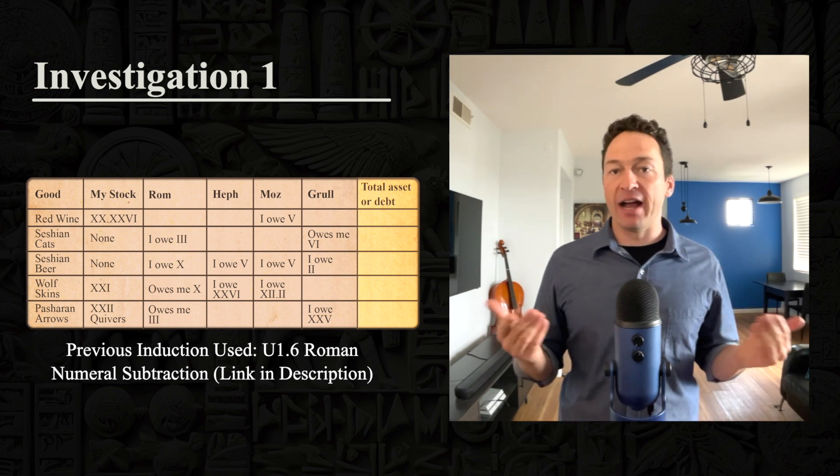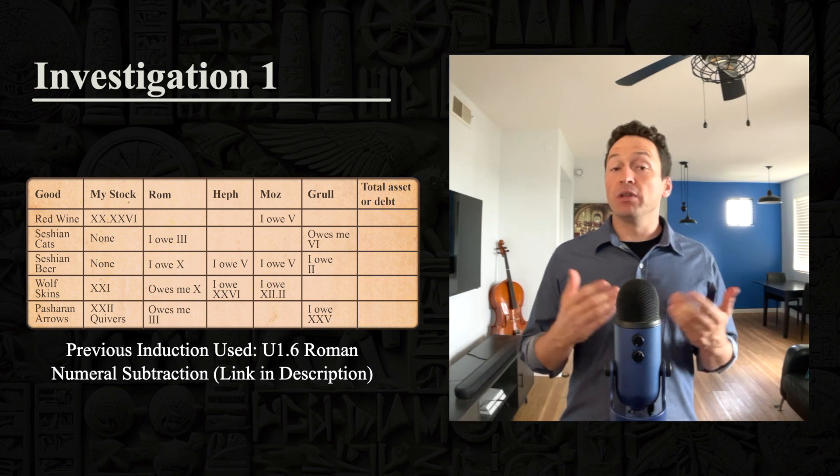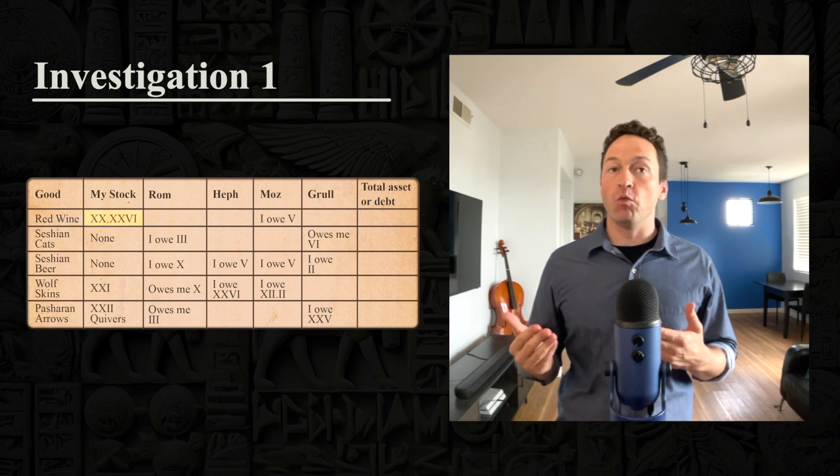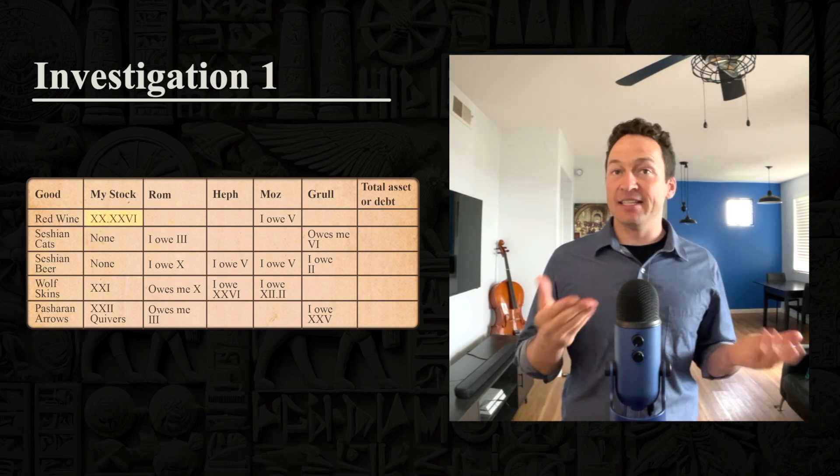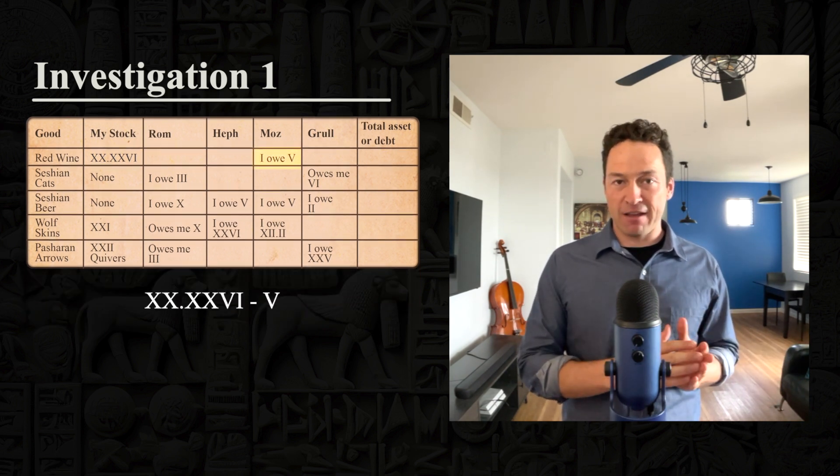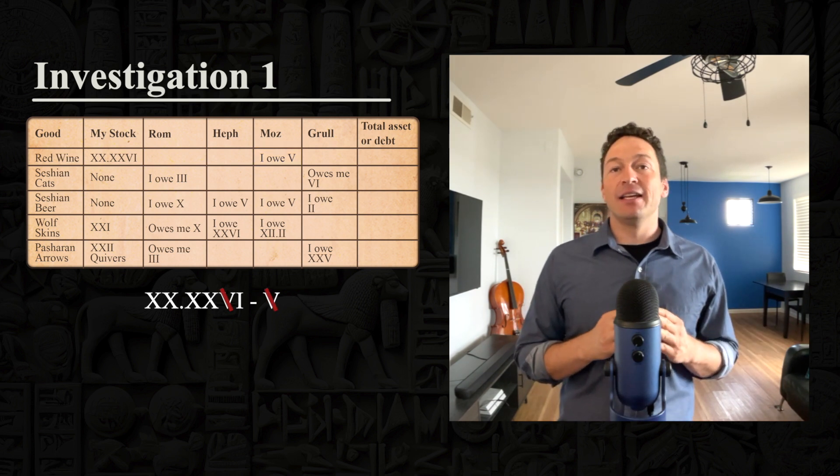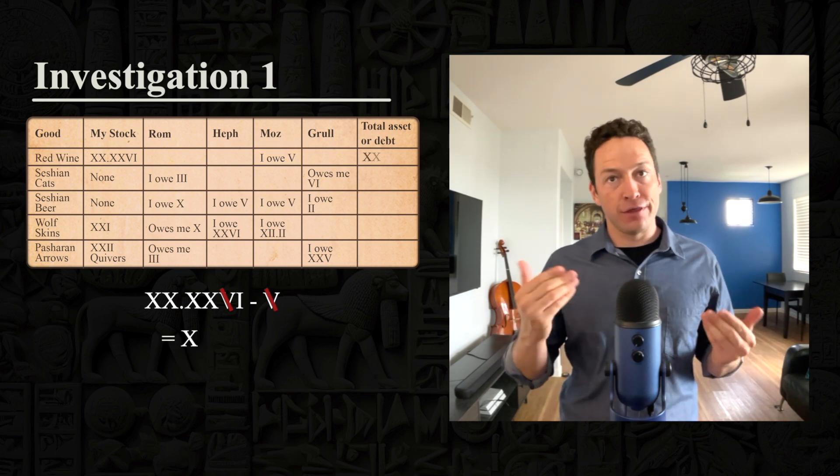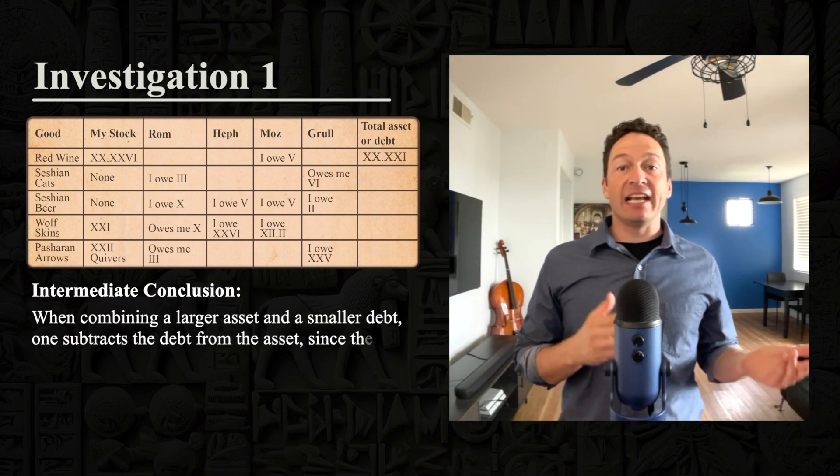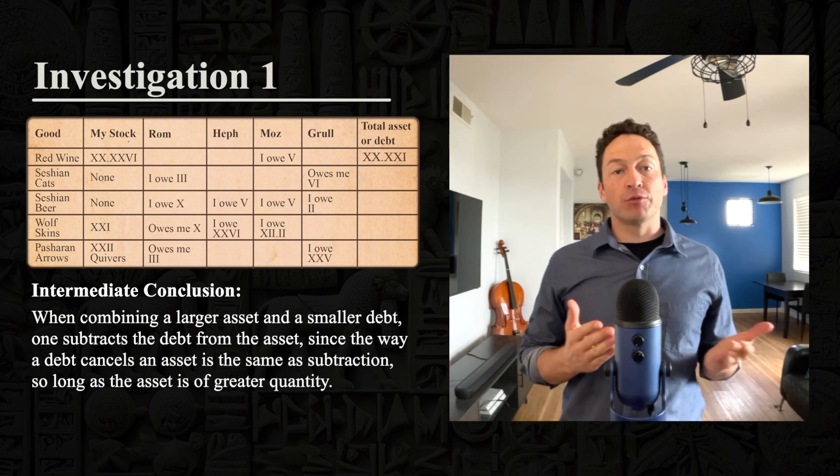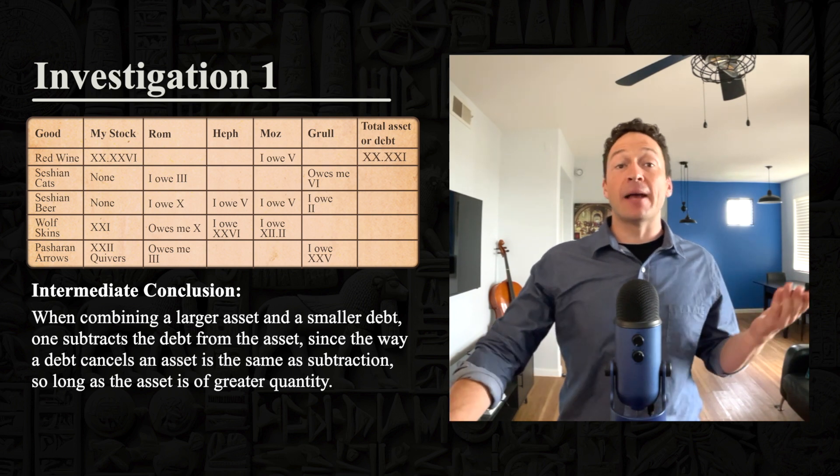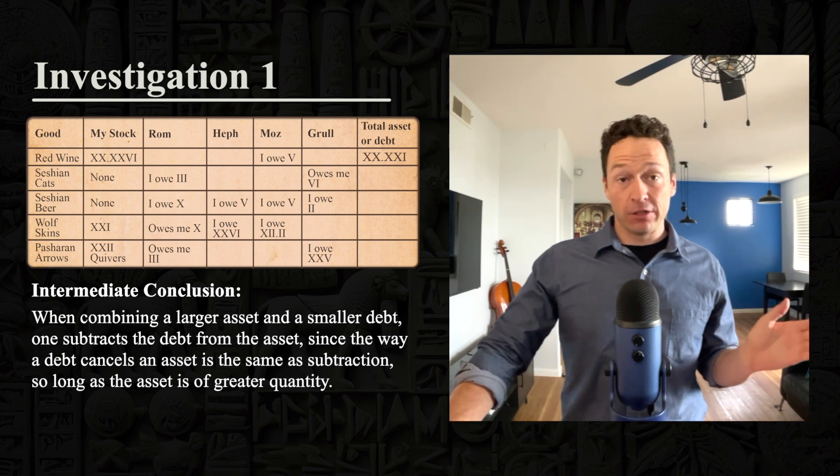Assets include things that are in his stocks, but also the quantities of goods that other people owe him. Then he has a concept of a debt and these are amounts of a certain good that he owes other people. In order to find his assets and debts of each kind, he comes up with this column on the far right to come up with the total asset or debt. Rom knows that he has to subtract debts from assets since he can see that subtraction is applicable in this particular case. So let's first find out the asset or debt of wine. After doing cancellation, he finds that he has a total asset of this many wines.